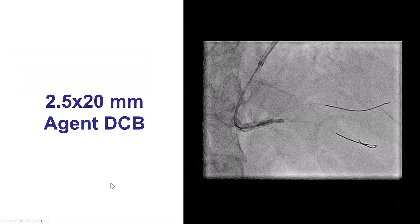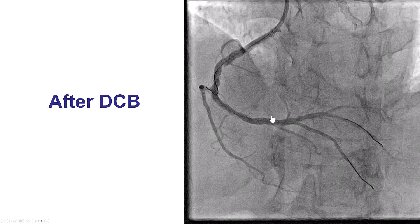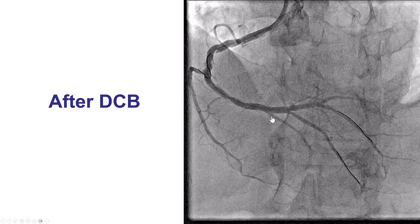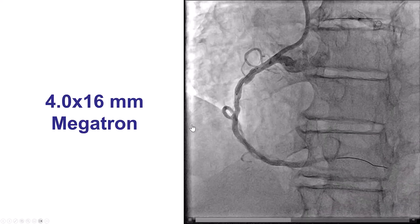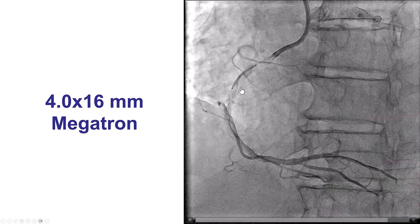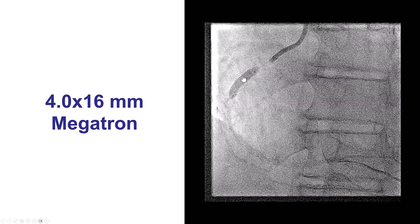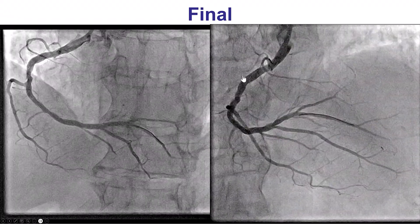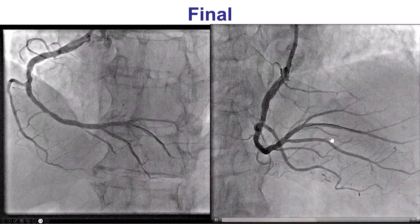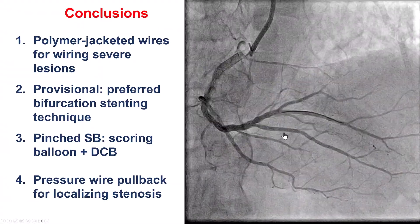We used a drug-coated balloon into the PDA to minimize the risk of restenosis, which made it look fairly good. We then placed a 4.0 by 16 mm Megatron stent across the proximal to mid-RCA lesion. This provided a nice result with TIMI 3 flow into the right coronary artery, excellent flow into the PDA, and the patient had an uneventful recovery.